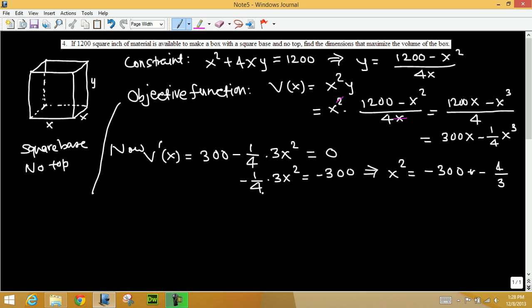3 on the top goes to the bottom, 4 on the bottom goes to the top, negative times negative, multiply positive, 3 goes into 300, 100 times, so 400. So x squared equals 400, so x equals plus or minus 20. These are just length, so we take just positive, negative value. So x equals 20.